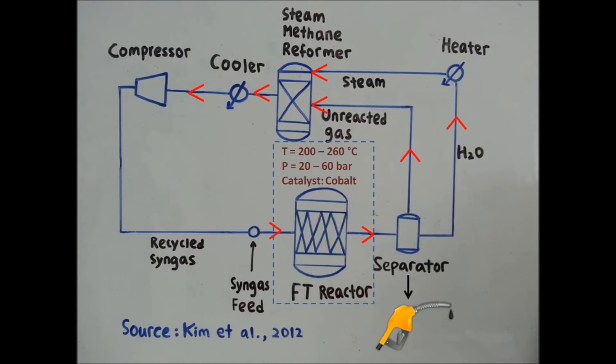The Fischer-Tropsch system consists of multiple unit operations for the conversion of syngas to liquid hydrocarbons. The design of the reactor is a very important factor to achieve efficient heat removal and to avoid deactivation of catalysts.